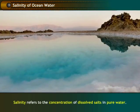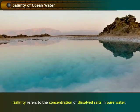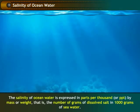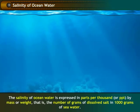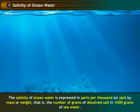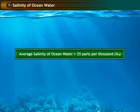Salinity refers to the concentration of dissolved salts in pure water. The salinity of ocean water is expressed in parts per thousand by mass or weight — that is, the number of grams of dissolved salt in 1,000 grams of sea water. The average salinity of ocean water is found to be 35 parts per thousand.